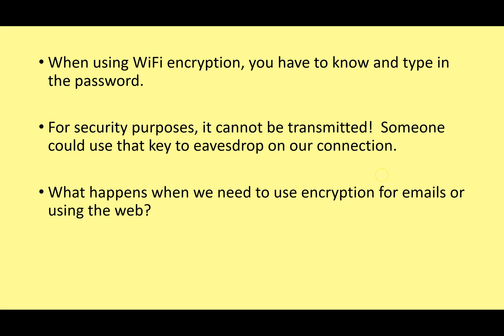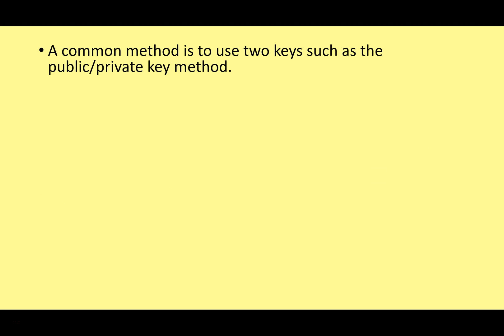But what happens when we need encryption for emails or the web? If you want to make a secure connection to Amazon to send your credit card details, someone from Amazon isn't going to come to your house and give you a password. To get around this, we use a method with two keys known as the public-private key method of encryption.